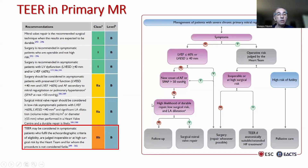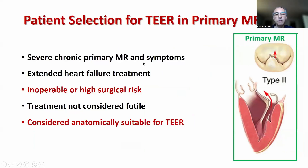For primary MR, the guidelines have fewer criterion steps. Patients with chronic severe primary MR considered inoperable or at high surgical risk, who are anatomically suitable for TER, and have received extended heart failure treatment, could be good candidates for TER. To summarize: severe chronic primary MR with symptoms, extended heart failure treatment accomplished, inoperable or high surgical risk, treatment not considered futile by the heart team, and anatomically suitable for TER.